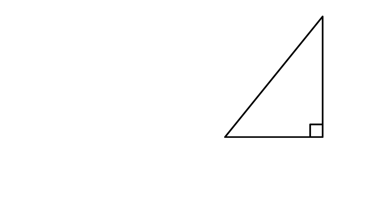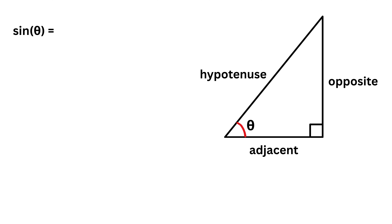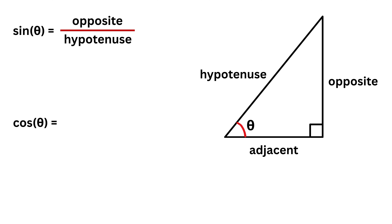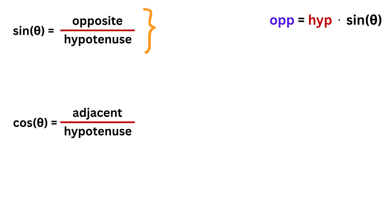Just to recap, we know that in a right-angled triangle, if this is angle theta, then this side is called the opposite side, this is the adjacent side, and this is the hypotenuse. Then sine of angle theta equals opposite over hypotenuse, and cosine of angle theta equals adjacent over hypotenuse. We can also rewrite this as: opposite equals hypotenuse times sine theta, and adjacent equals hypotenuse times cosine theta.